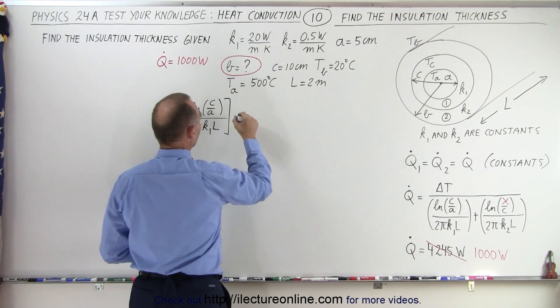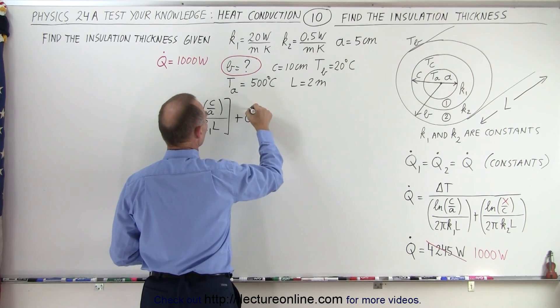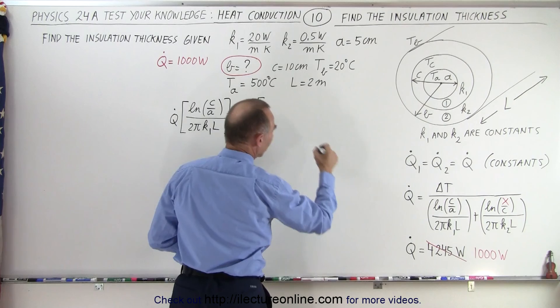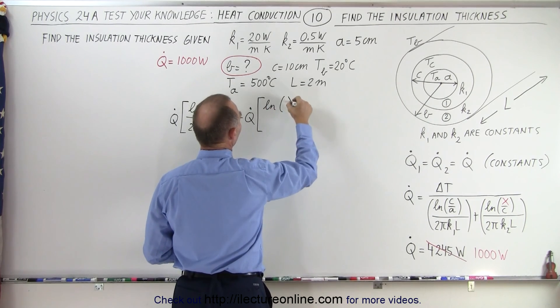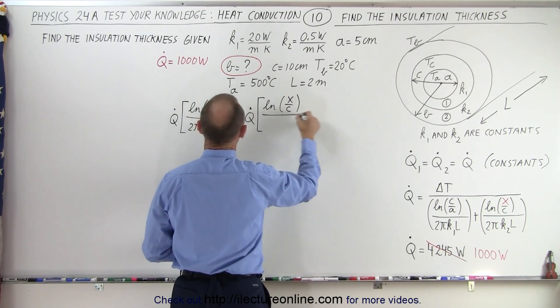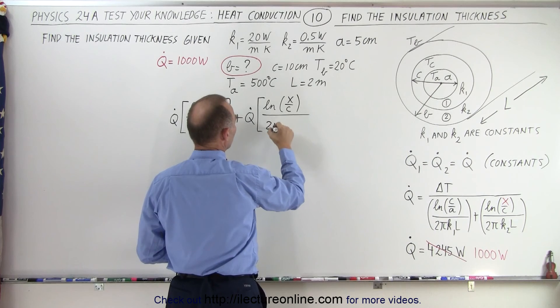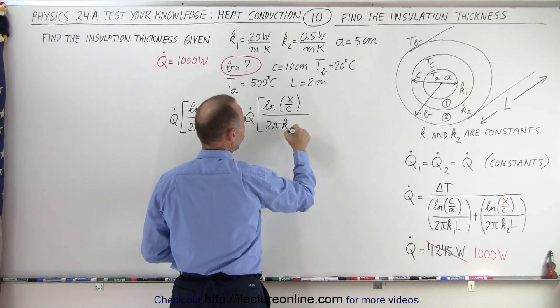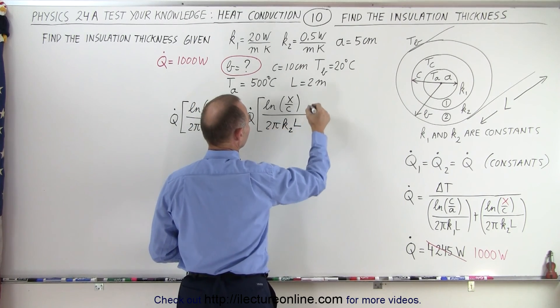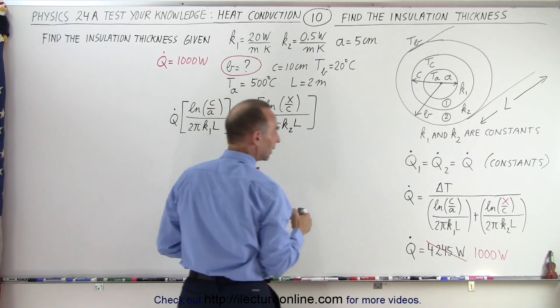And that would be plus q dot times the natural log of x over c divided by 2 pi k2 times l. So we cross multiply that.